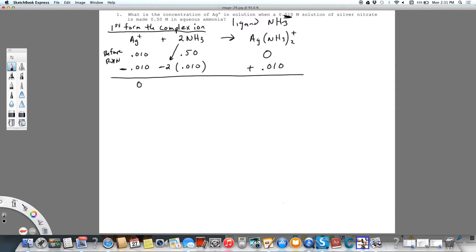So at the end, we're going to say we have zero. We're going to say it all gets used up. We're going to say we have 0.48 molar for our concentration of ammonia and then the complex, we're going to say that it completely forms.